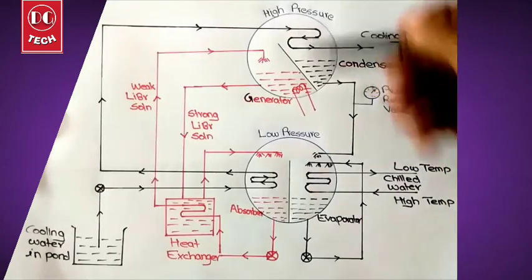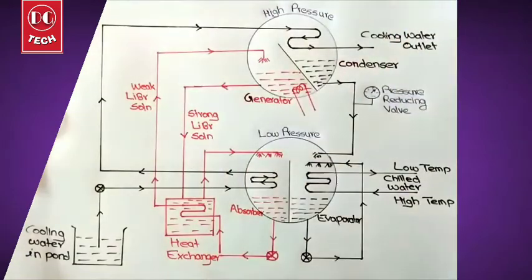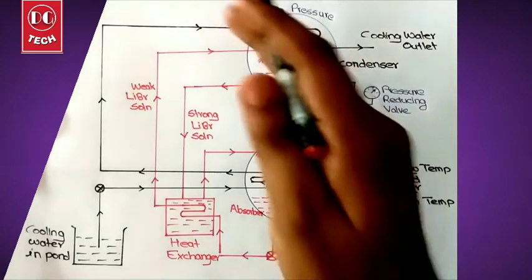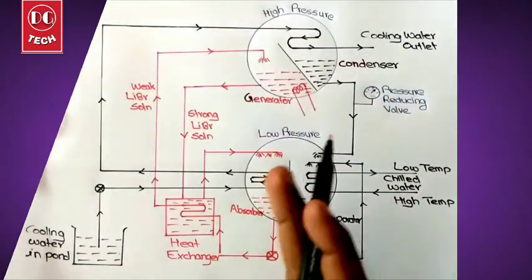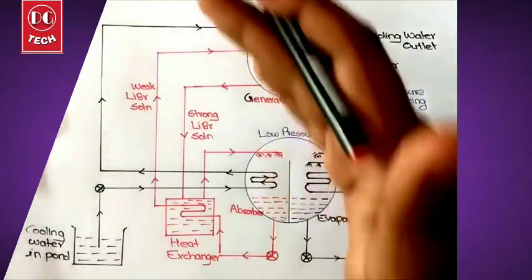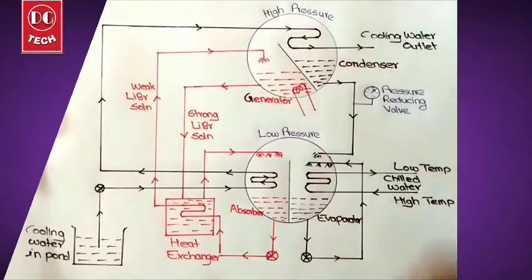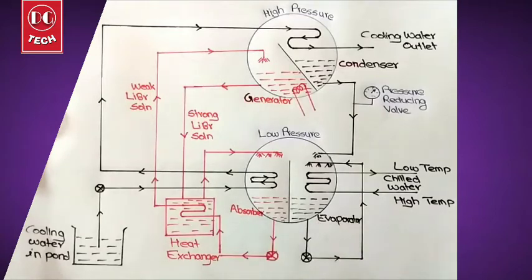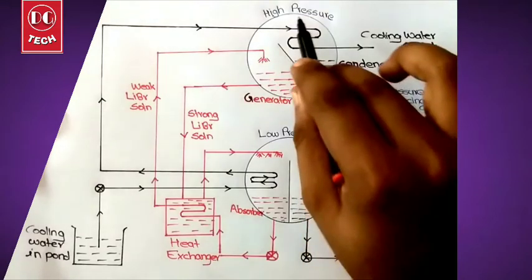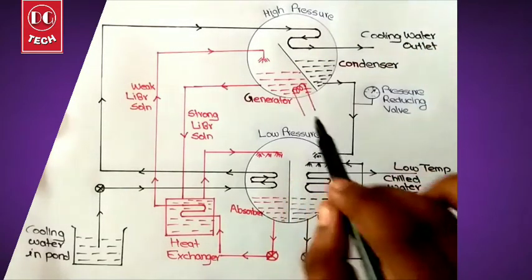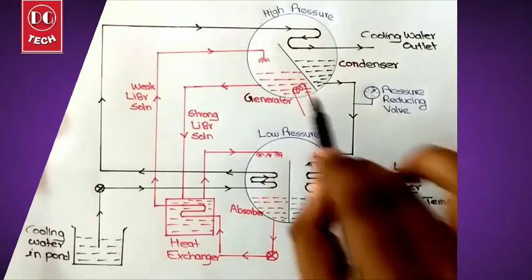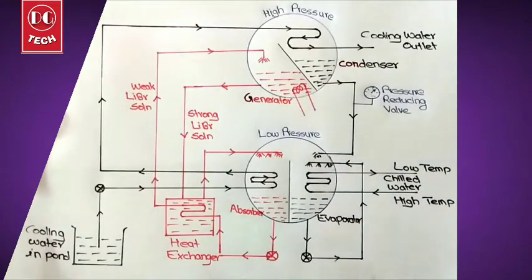This is a cross section of the cylindrical chamber. These chambers are subdivided using a partial valve. The left portion of the low pressure chamber is known as the absorber and the right portion is known as the evaporator. The left portion of the high pressure chamber is known as the generator and the right portion is known as the condenser.